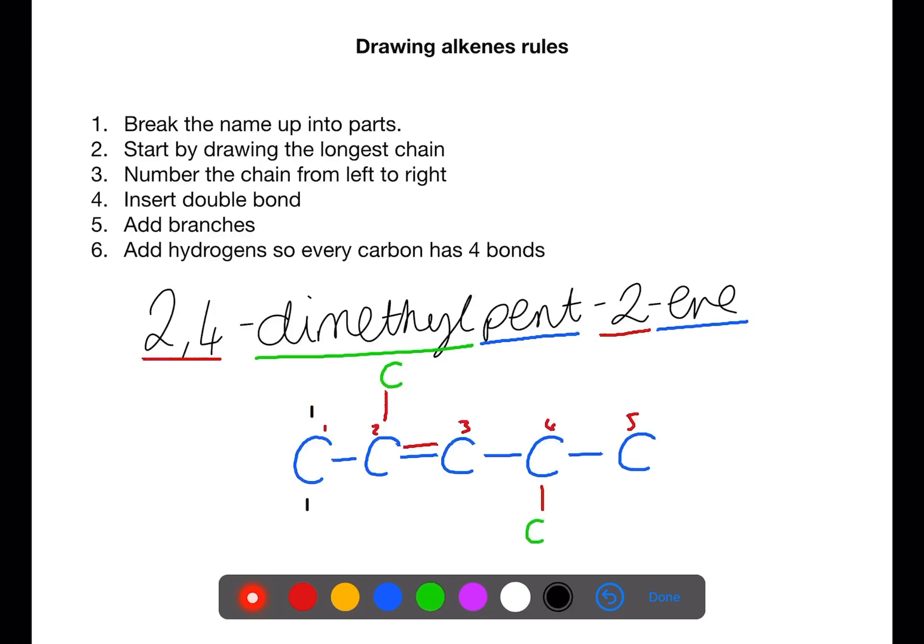You then need to go around and fill in the bonds so that every carbon has four bonds. Take care around the double bonds to make sure that each carbon only has four bonds. Complete these bonds with hydrogen atoms.